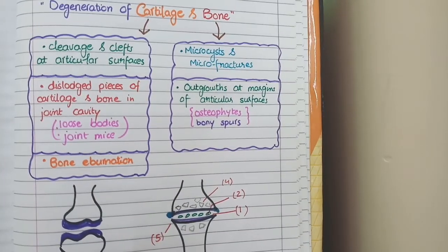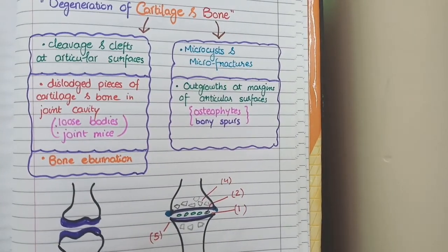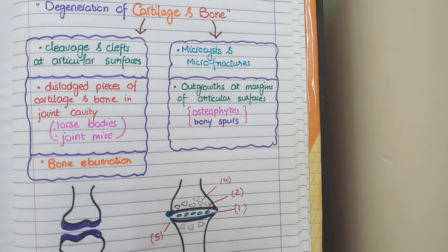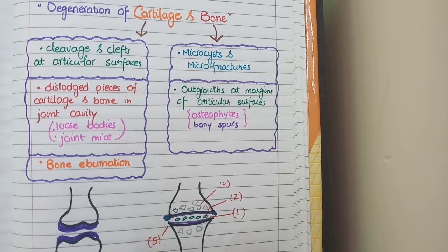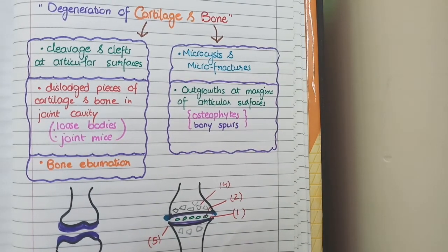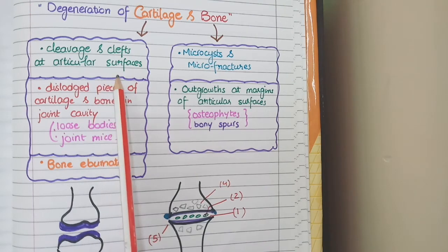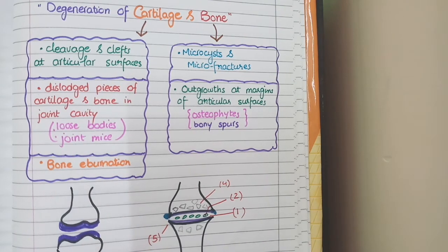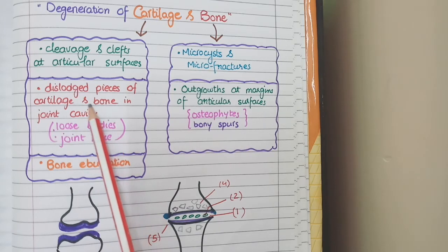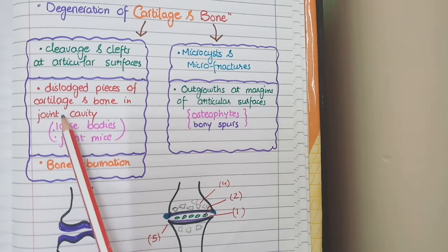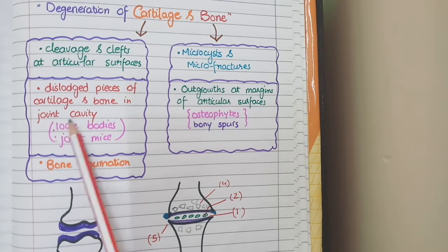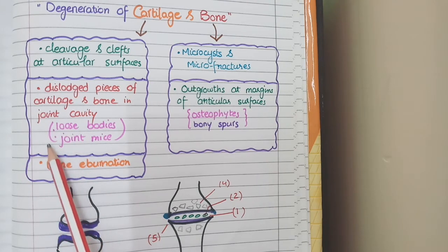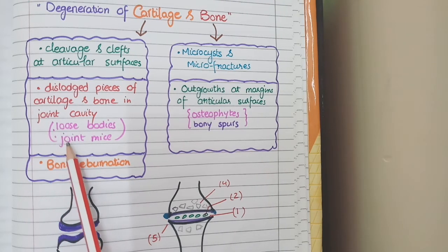Now let's translate these keywords into a microscopic picture. Firstly, there is degeneration of cartilage. This degeneration of cartilage is visible as cleavages and clefts at the level of articular surfaces. Secondly, as the cartilage is being degenerated, some broken pieces of articular cartilage and bone become dispersed or dislodged in the joint cavity. Such dislodged pieces of cartilage and bone in the joint cavity are called loose bodies or joint mice.